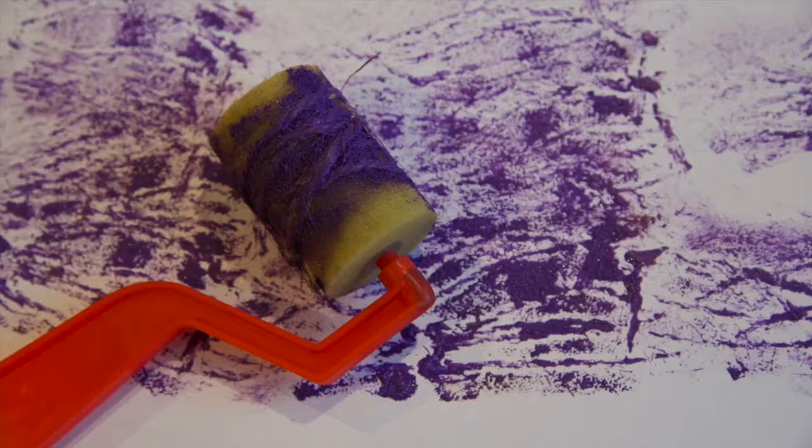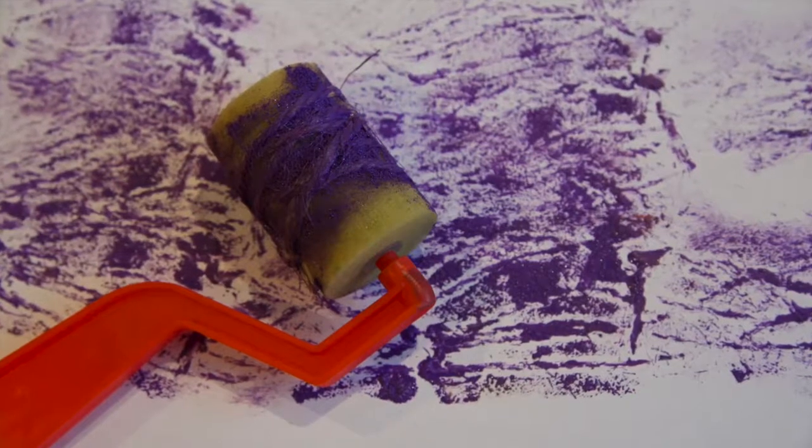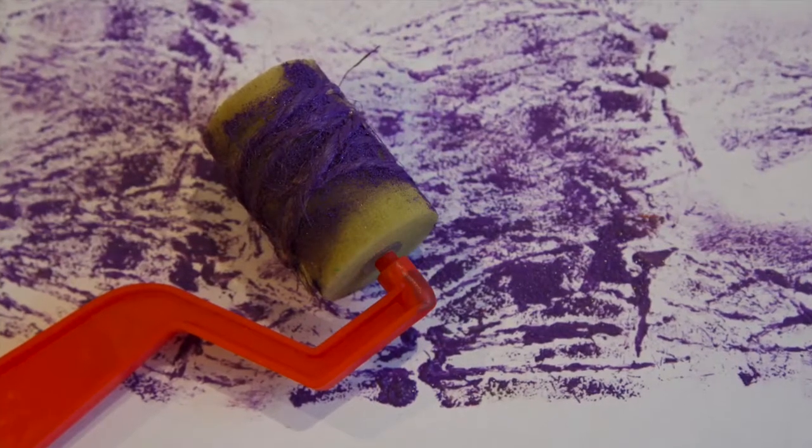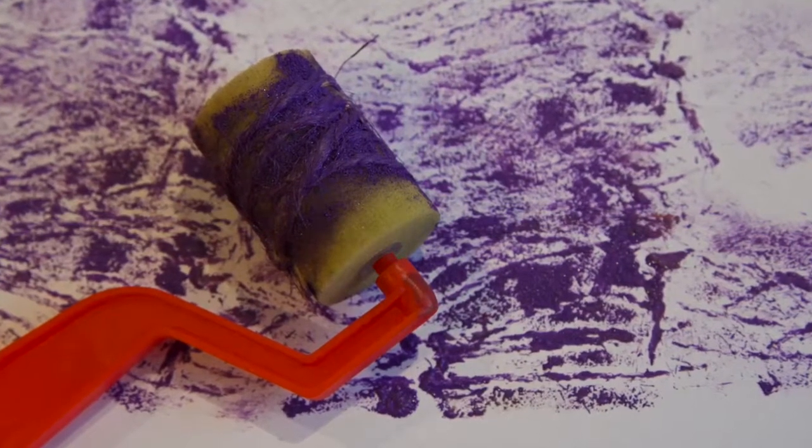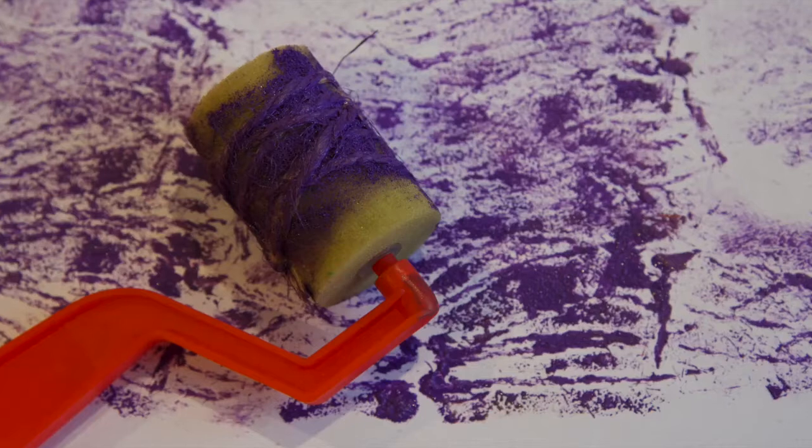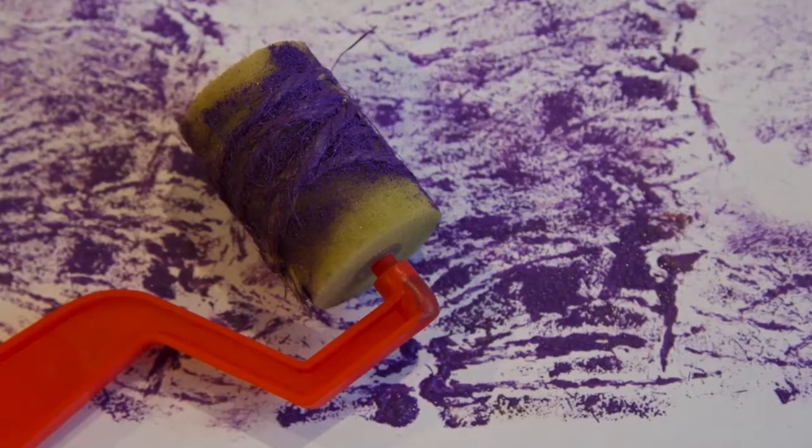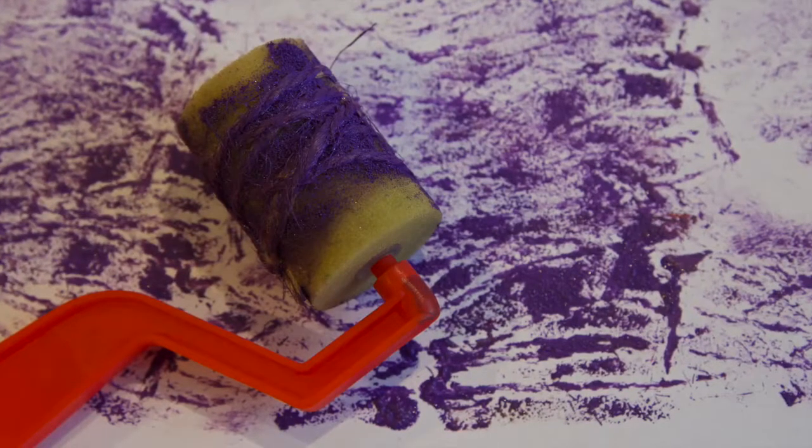This technique uses a lot of paint so prepare to get messy. Make sure you squash your roller through the paint nice and thick before you roll it over your paper. You get this really great striped effect, so if you used green it would be great for grass in your artwork.